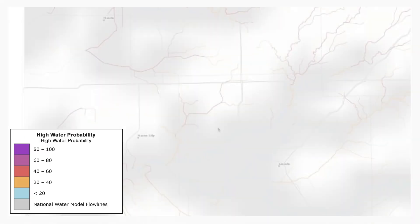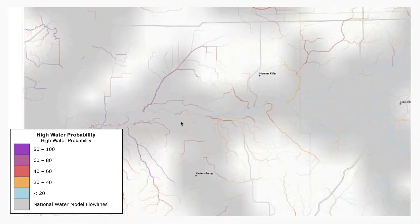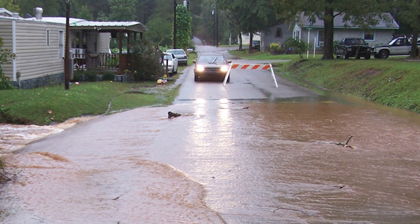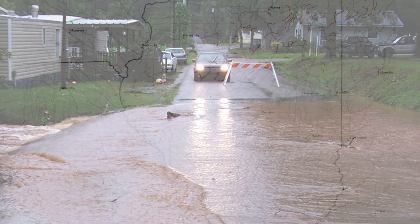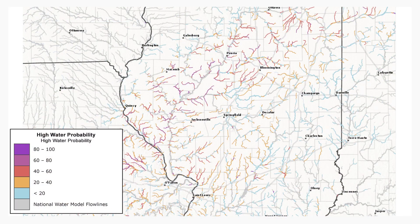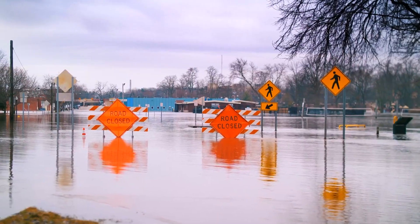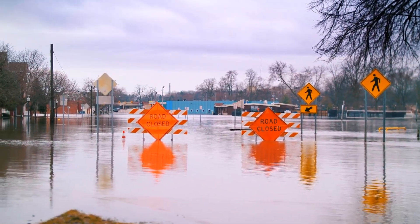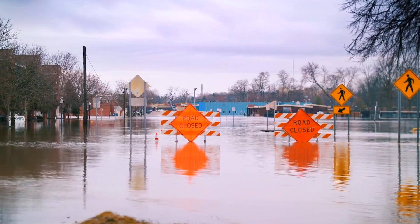The 12-hour high water probability forecast provides useful guidance for building forecasters' confidence when issuing statements or warnings regarding high water in the short term. Higher probabilities can support the decision to issue flood warnings.